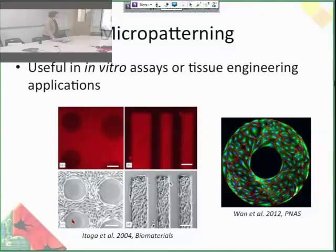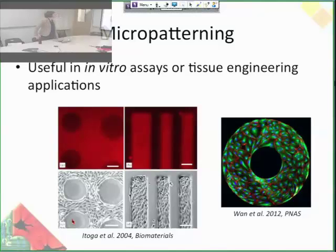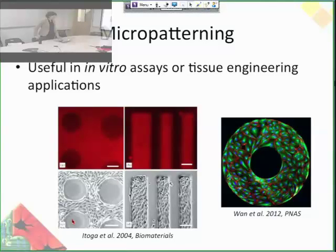I want to briefly mention micropatterning because it's really cool. You can micropattern proteins in a controlled way onto a surface. These are examples of micropatterning fibronectin onto PDMS, which is so hydrophilic that cells cannot attach because proteins can't adsorb. When fibronectin is placed only in specific areas, you can see that cells only attach in those areas. This is really useful in vitro or in tissue engineering applications. The Christmas wreath on the right is an example of endothelial cells seeded into a circle using fibronectin micropatterning — researchers were able to determine that endothelial cells actually have a chiral nature in that they preferentially go in a certain direction, which no one knew before micropatterning.